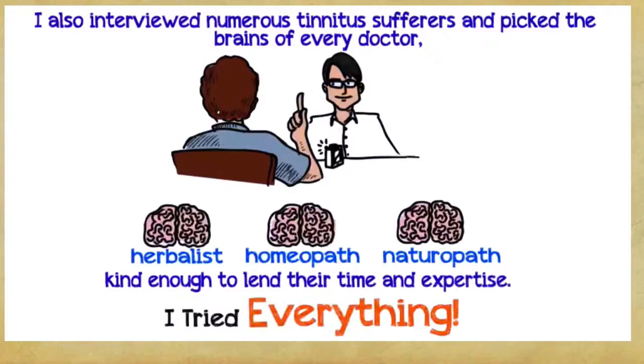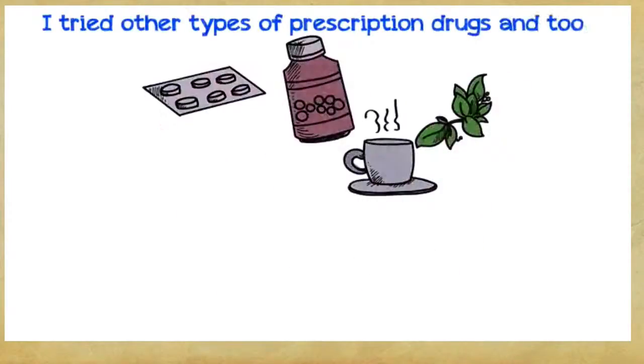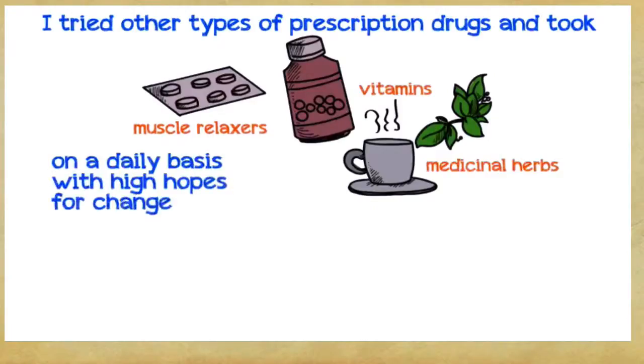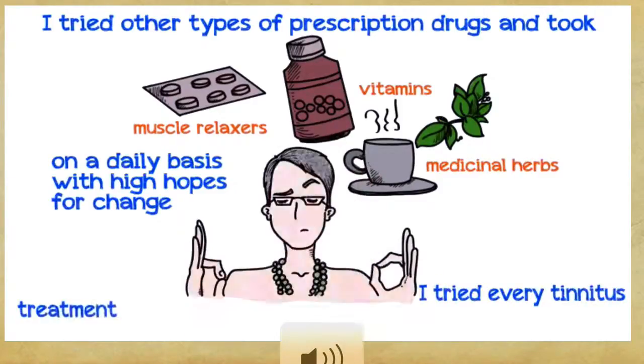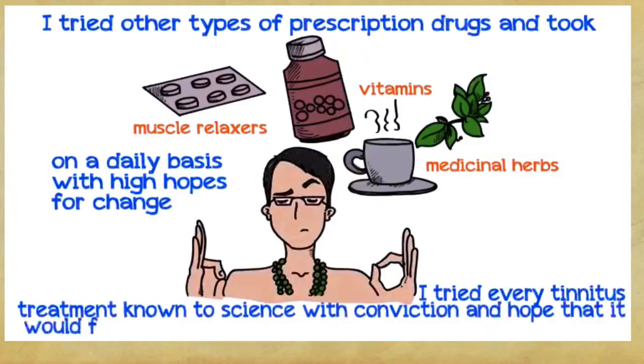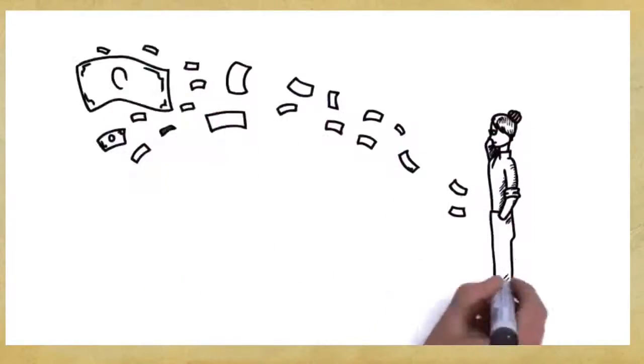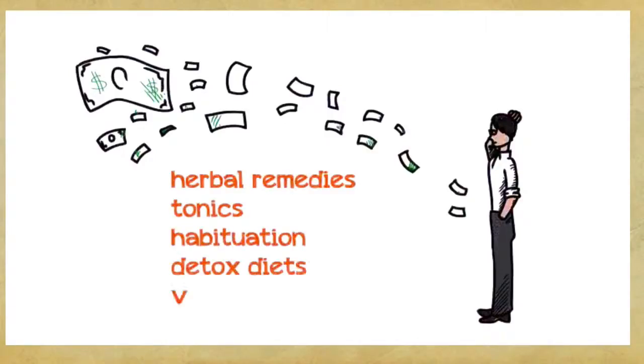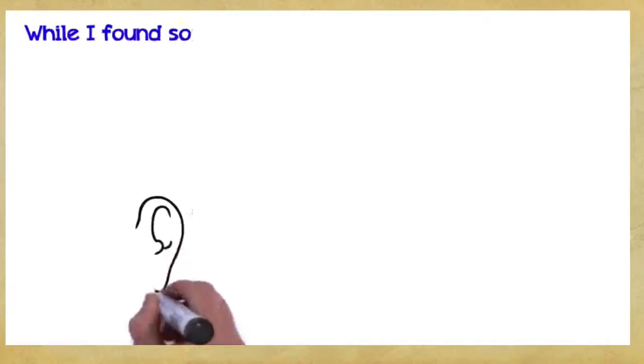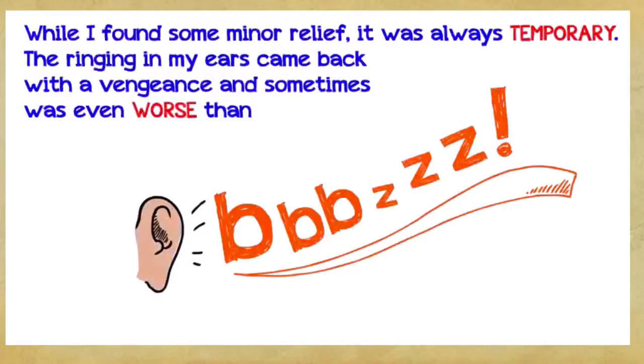I tried everything. Scientific facts, figures, and theories weren't enough. I tried other types of prescription drugs and took more muscle relaxers, vitamins, and medicinal herbs on a daily basis with high hopes for change. I bought numerous white noise CDs and did plenty of noise therapies, but to no avail. I tried every tinnitus treatment known to science with conviction and hope that it would finally eliminate my tinnitus and help me regain my life. Over the years, I spent a small fortune trying every type of product and treatment you could possibly think of—herbal remedies, tonics, habituation, detox diets, vitamin therapy, and so on. While I found some minor relief, it was always temporary. The ringing in my ears came back with a vengeance and sometimes was even worse than before treatment.